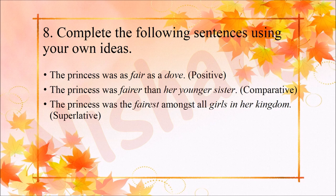Point 8: Complete the following sentences using your own idea. Example answers: The princess was as fair as a dove. The princess was fairer than her younger sister. The princess was the fairest among all the girls in her kingdom.